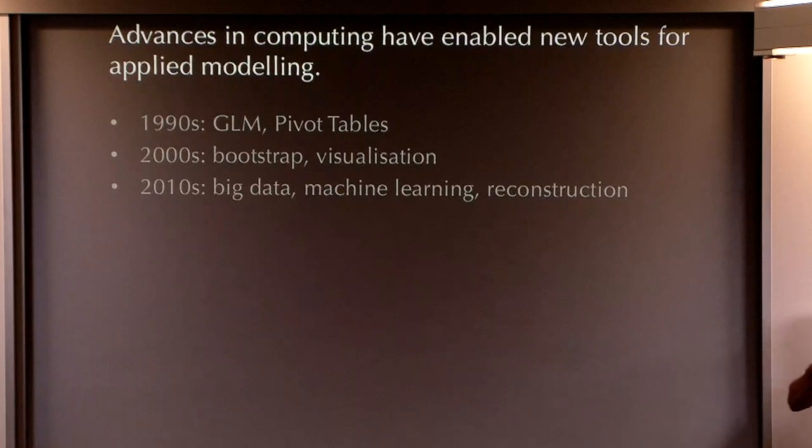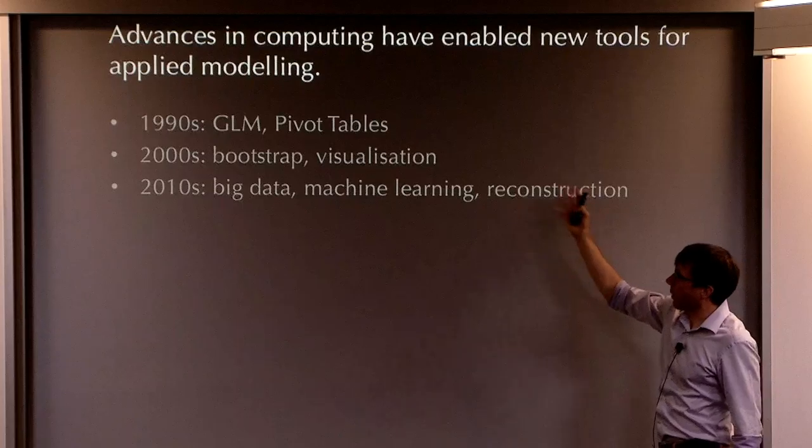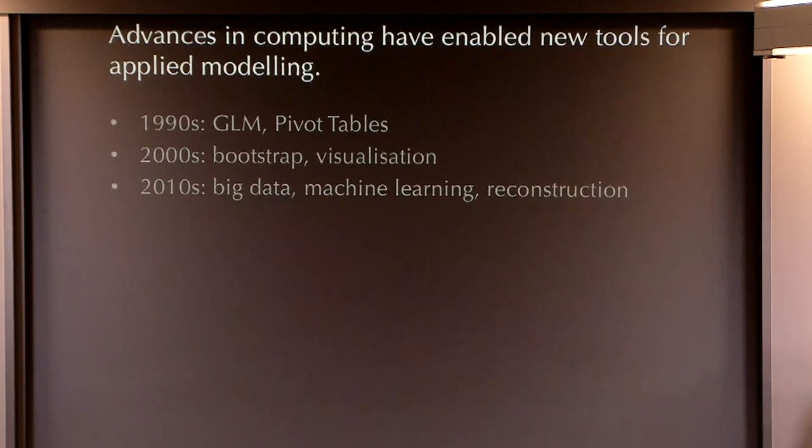In the 2000s, that's when Bootstrap became computationally feasible. And it's when good visualisation theory came on board, leading to good visualisation packages, particularly D3 and GGplot. So that's the past. The present big data machine learning reconstruction. We've heard a fair bit about reconstruction now, so I won't repeat that. But let me draw a quick picture of big data and machine learning as applied to control problems.